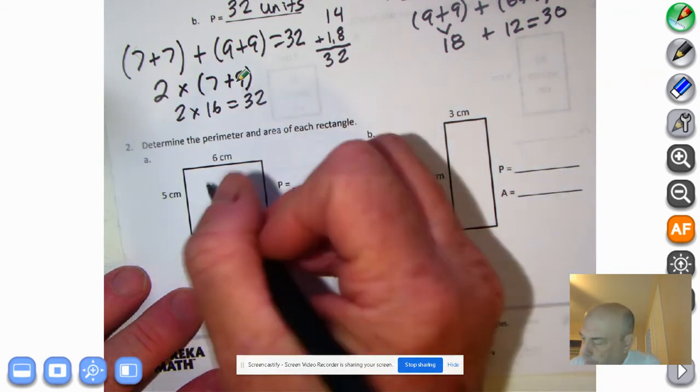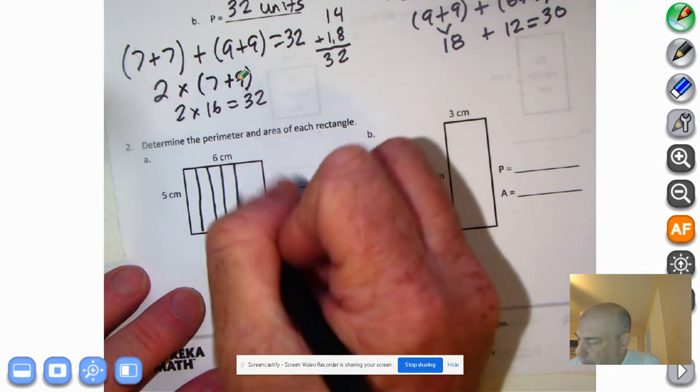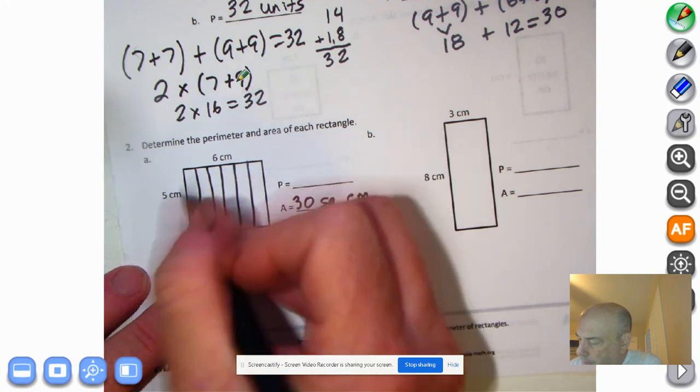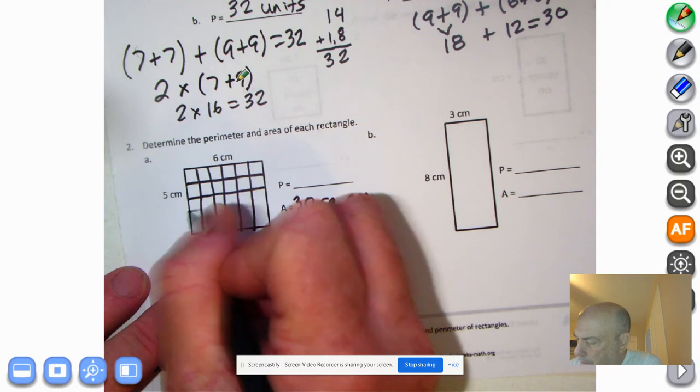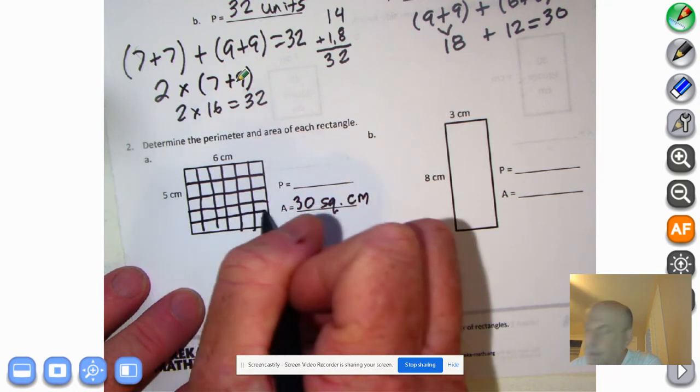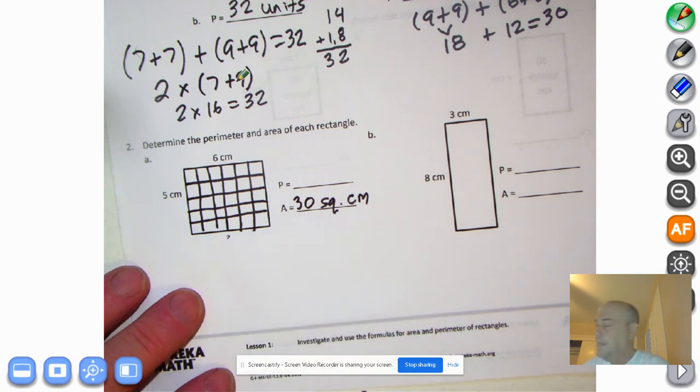And, you know, we can just review this again with one, two, three, four, five, and six. And then one, two, three, four, and five. How many little squares are in there? So if you said 30, you are correct.